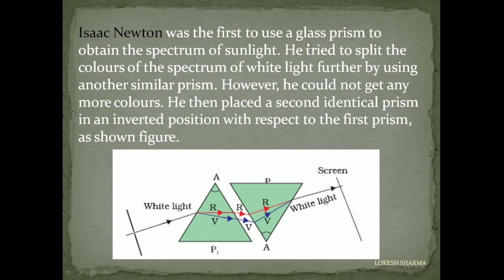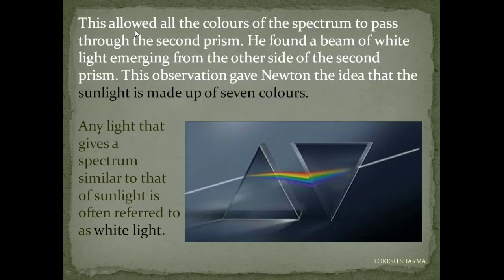Isaac Newton was the first to use a glass prism to obtain the spectrum of sunlight. He tried to split the light further using another similar prism but could not get any more colors. He then placed a second identical prism in an inverted position with respect to the first prism, allowing all the colors of the spectrum to pass through the second prism. He found a beam of white light emerging from the other side — this gave Newton the idea that sunlight is made up of seven colors.